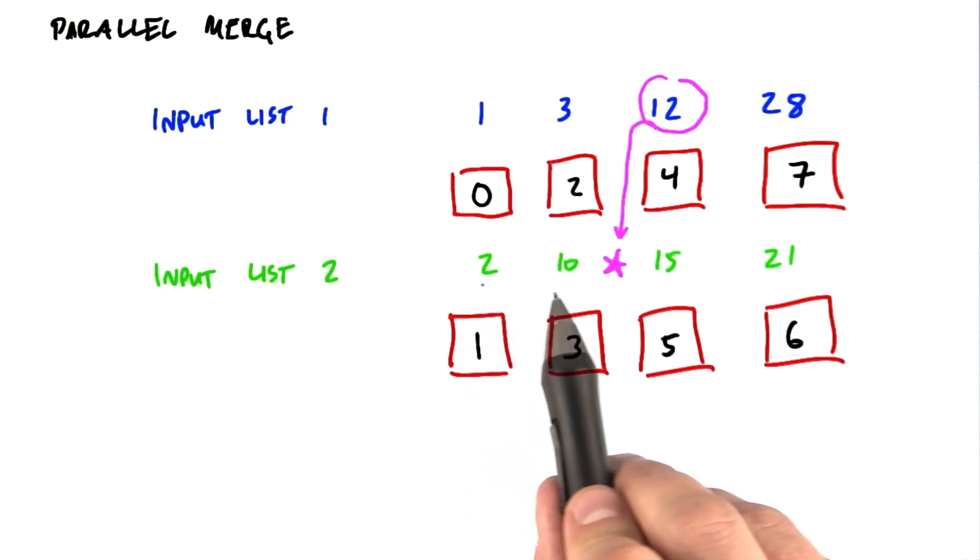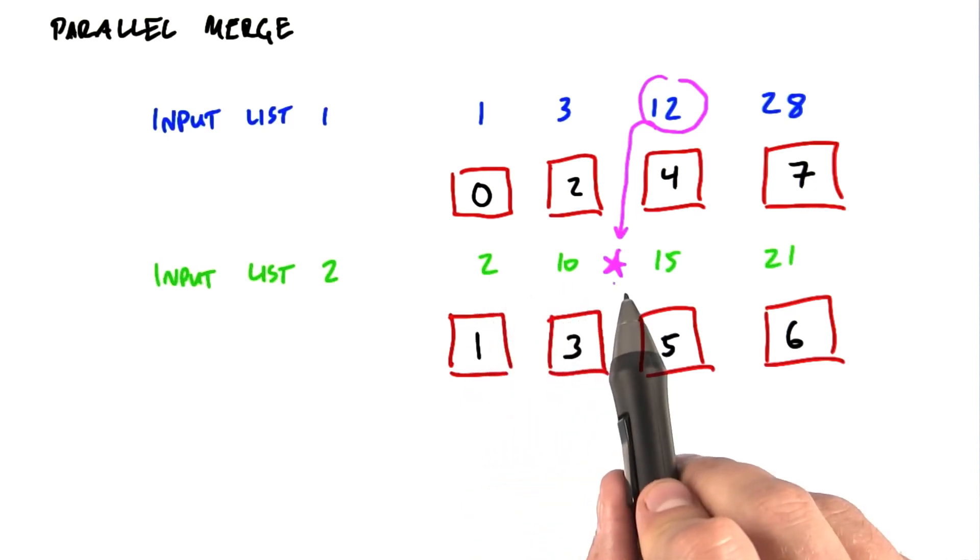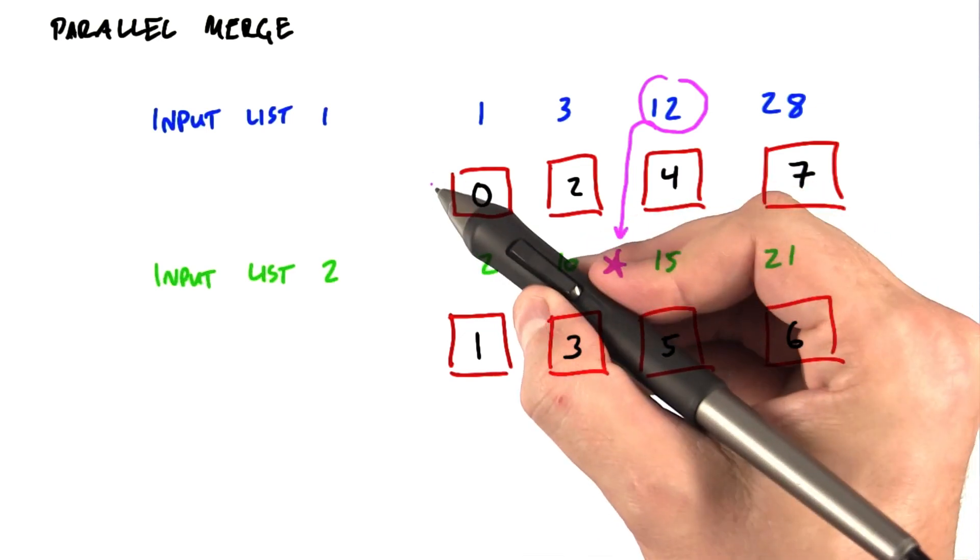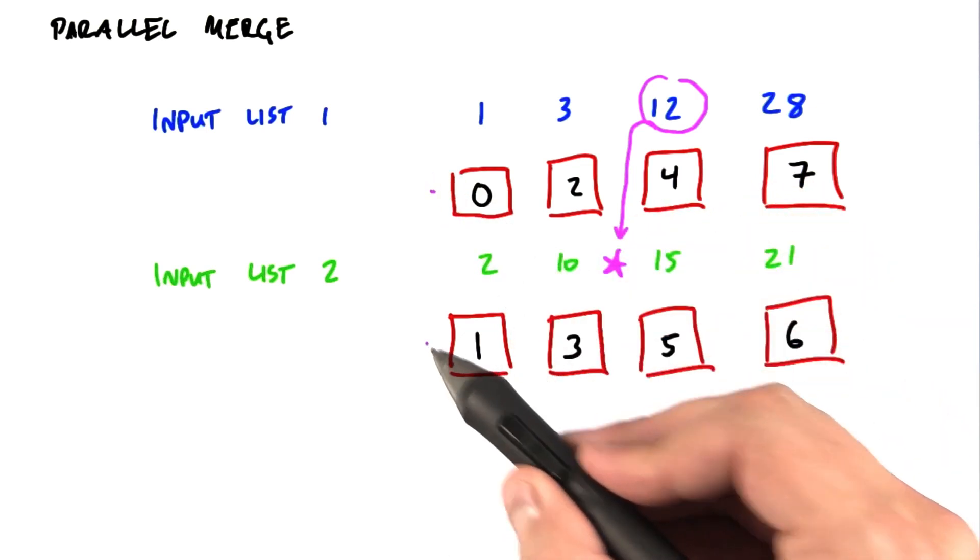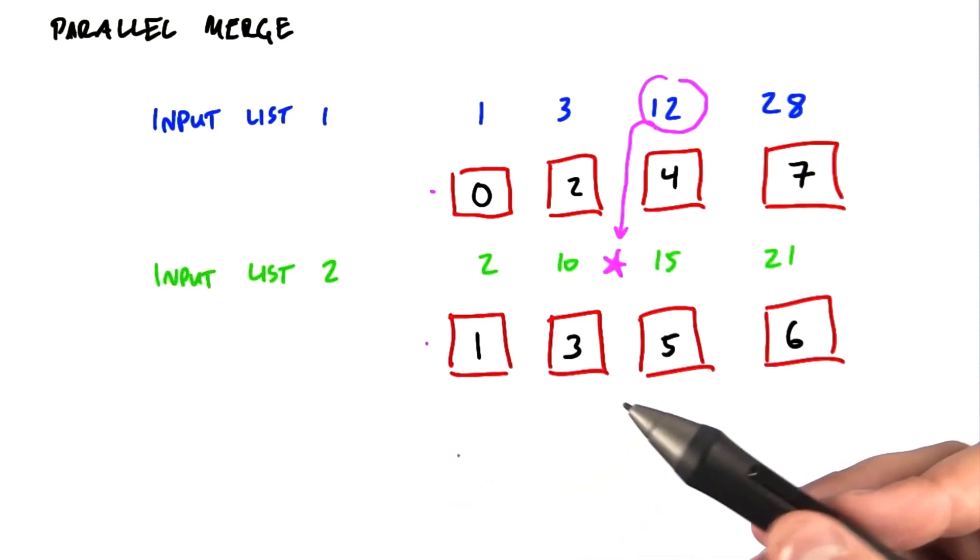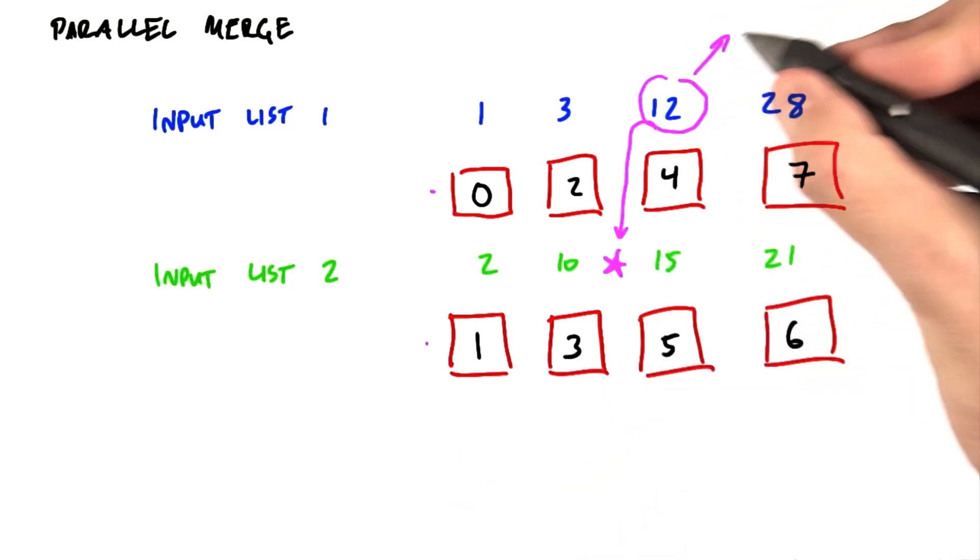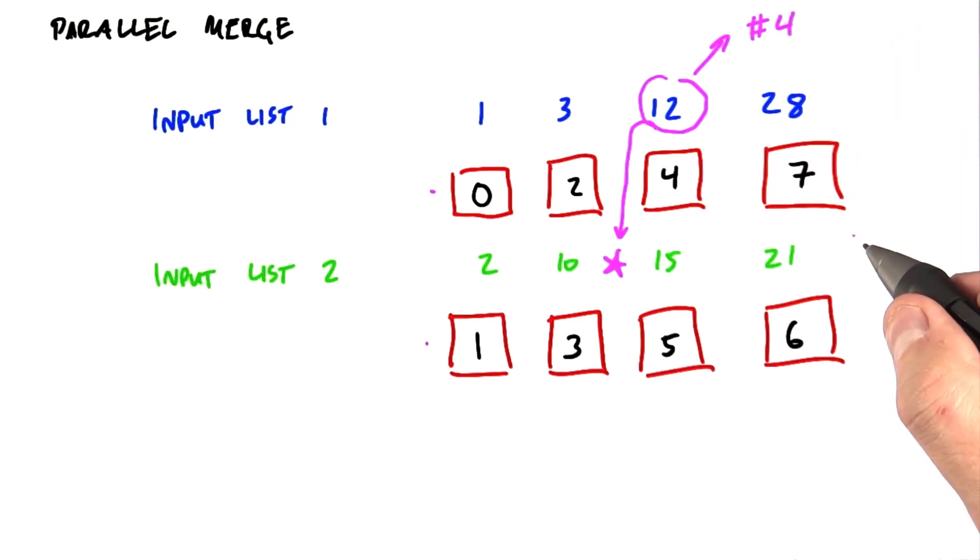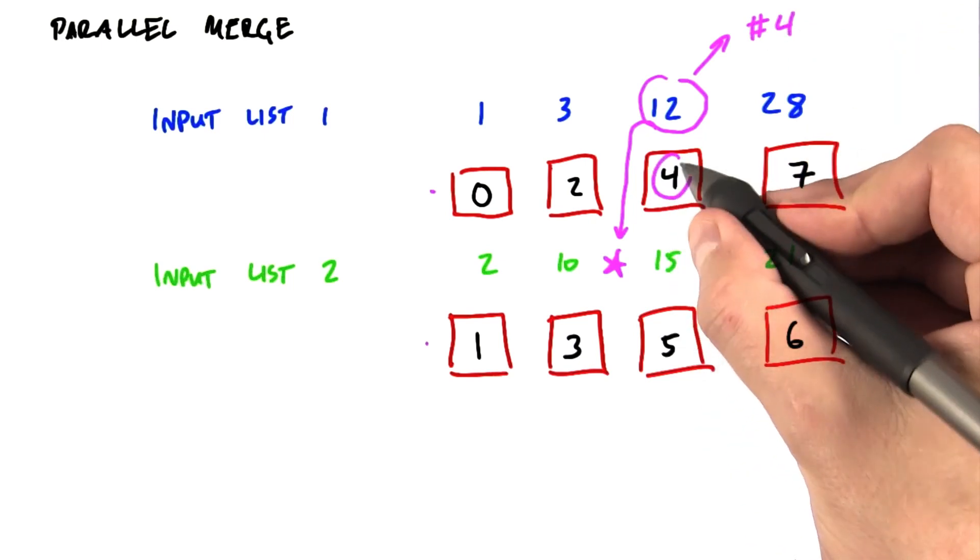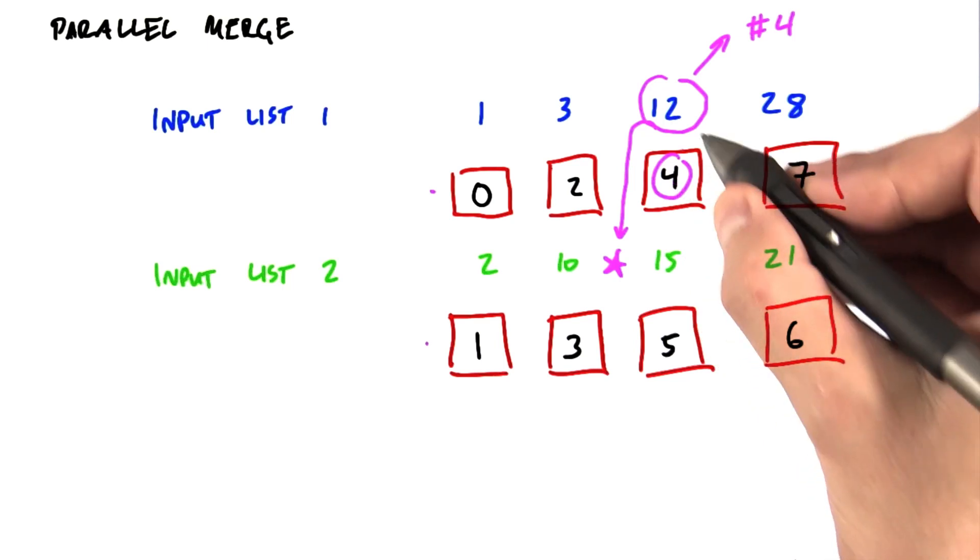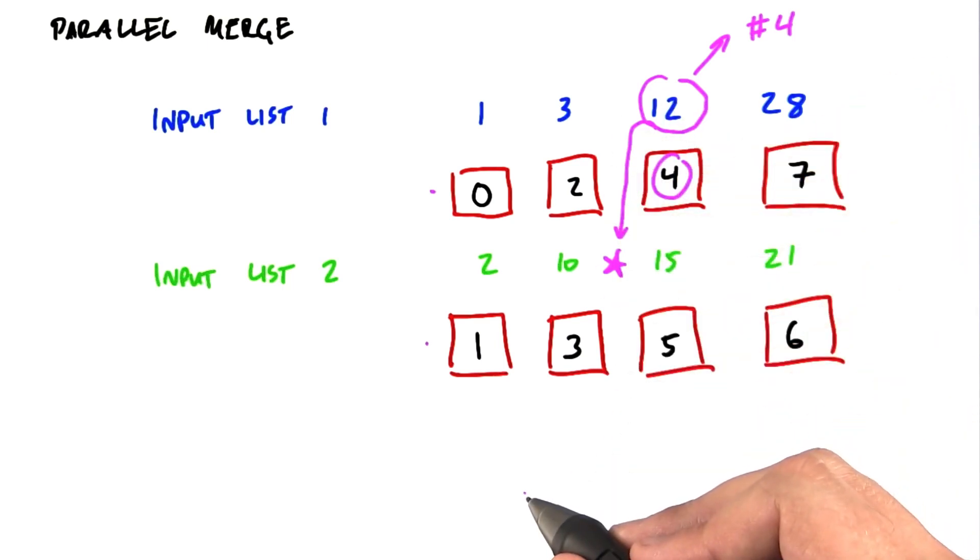This guy would be at position 0, this guy would be at position 1, and I would be at position 2. So in the overall list, I know I'm behind two elements here, and I know I'm behind two elements here. So I can add those things together and discover that in the final sorted list, I would be at position number 4. And that is the scatter address that I need to put him in the right position in the output list.